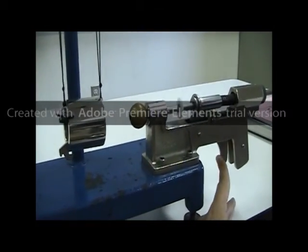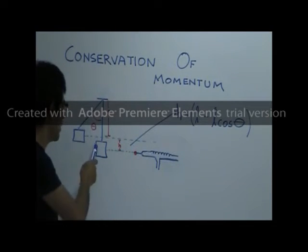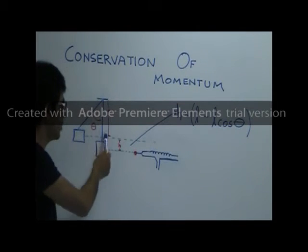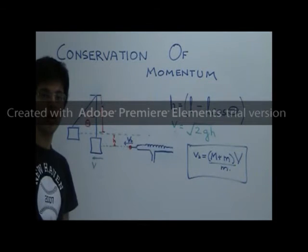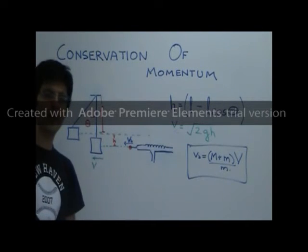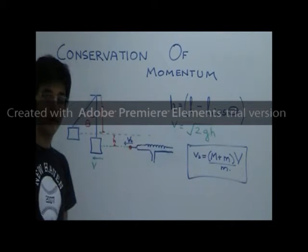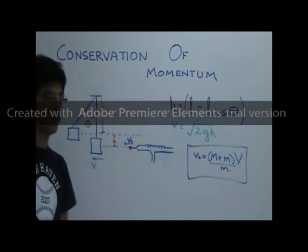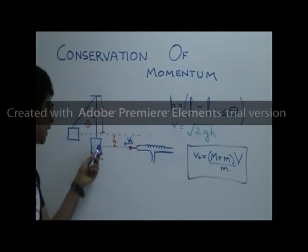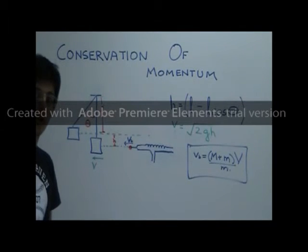Let us now fire the ball into the catcher. The height to which the pendulum rises can be calculated using the length of the pendulum and the angle of deflection. Our objective is to determine the velocity with which the ball is launched from the spring gun. We use two basic laws: conservation of energy and conservation of momentum. Once the ball embeds itself into the catcher, the ball-catcher system rises to a height, and the velocity is determined using conservation of energy.